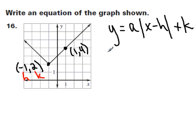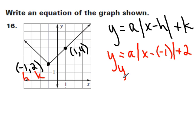So when I fill in those values into the equation, I have a times the absolute value of x minus a negative 1, and then plus 2 to move it up. Minus a negative 1 is the same as plus a positive, so I have y equals a times the absolute value of x plus 1 plus 2.